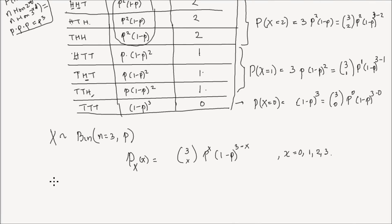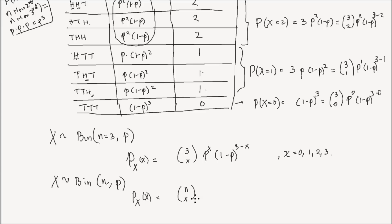In general, if x follows a binomial distribution with number of trials n and probability of success p, the PMF is given by: p(x) equals n choose x, times p to the power of x, times 1 minus p to the power of n minus x. The support of x is the integers 0, 1, 2, 3, all the way to n.